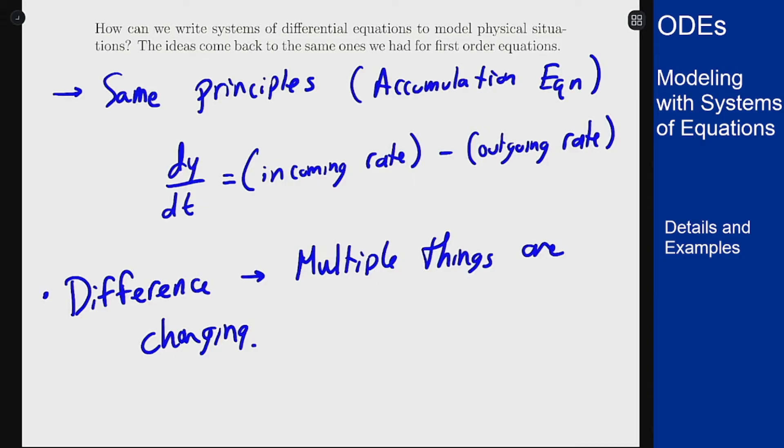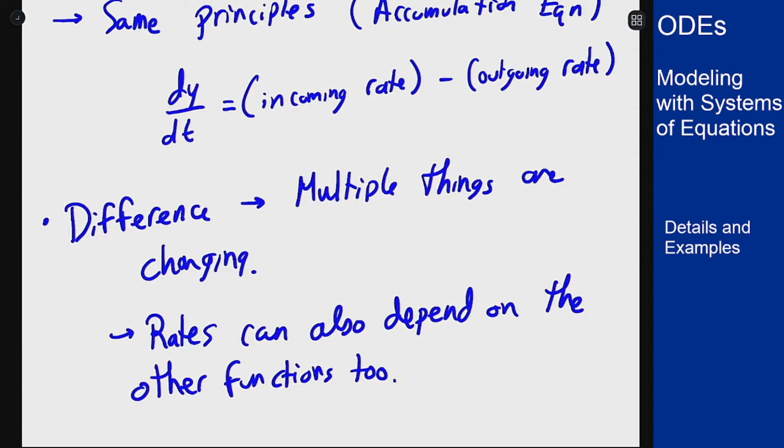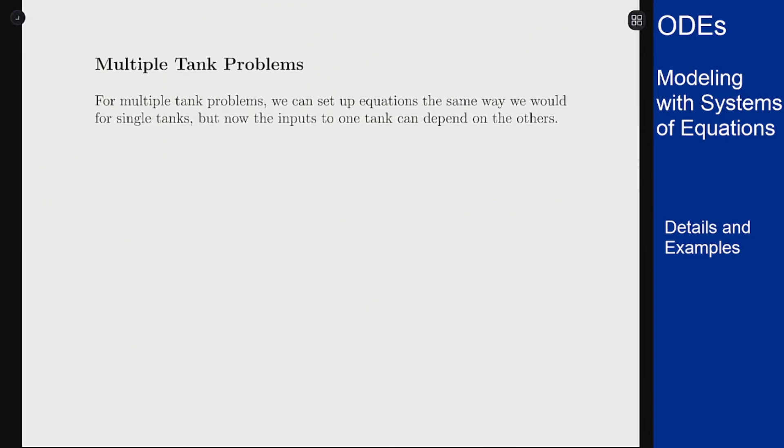So the rates of change and incoming and outgoing rates can not only depend on the thing you're looking at and t, but also the value of the other functions, the other components that are also working here, and they can all come together to write this system. A lot of the same types of problems we solved before for first order equations can be extended to systems, and the main example of that is multiple tank problems. The process here is identical to what it is for a single tank. There are just now multiple tanks involved.